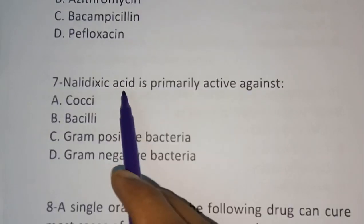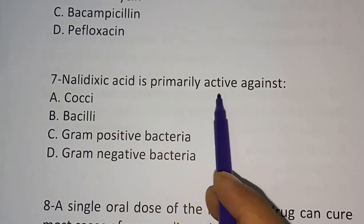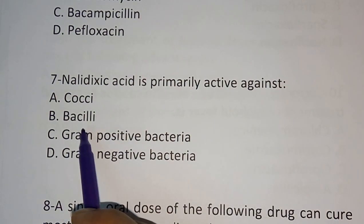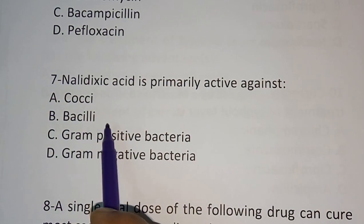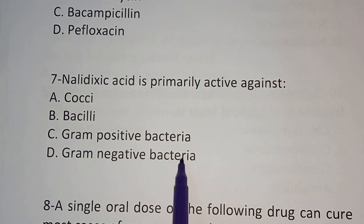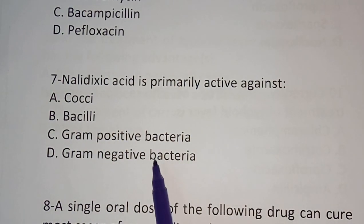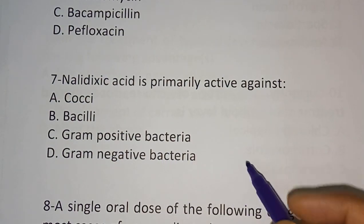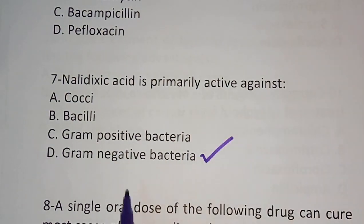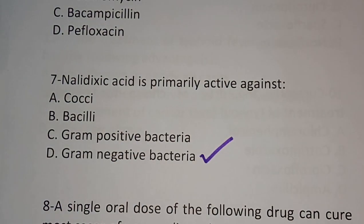Question number seven: nalidixic acid is primarily active against which bacteria? Options are: cocci, gram-positive bacteria, gram-negative bacteria. The correct answer is gram-negative bacteria, which is why it is mainly used in urinary tract infections.